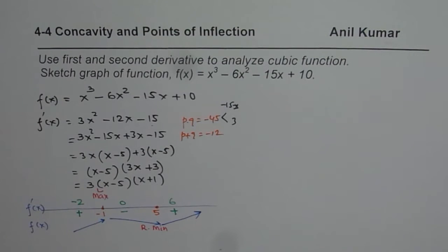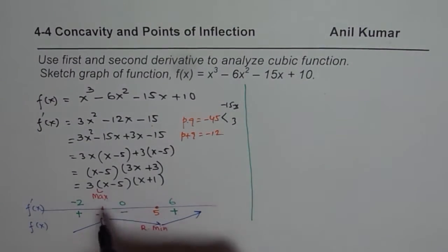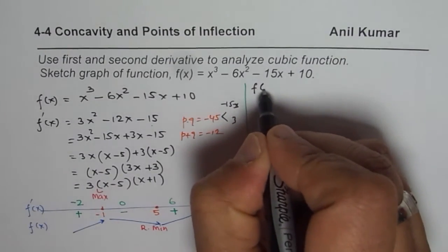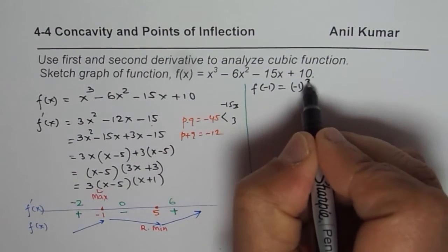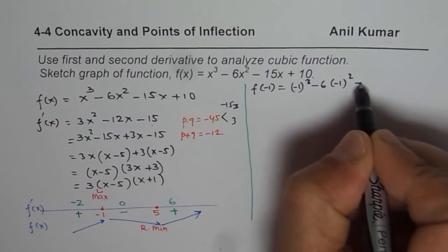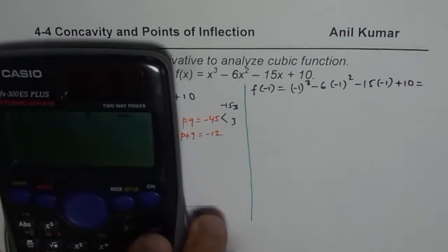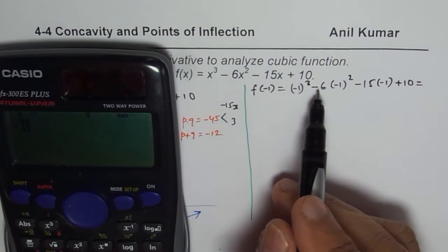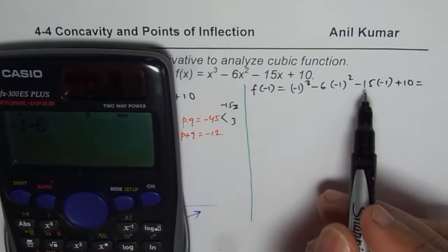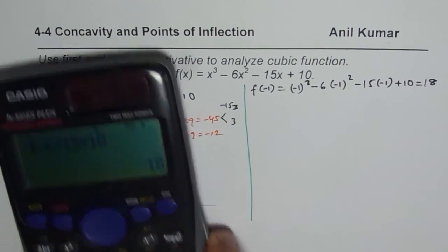Now we can find the actual maximum and minimum values by substituting into the original function. Substituting x = −1: f(−1) = (−1)³ − 6(−1)² − 15(−1) + 10 = −1 − 6 + 15 + 10 = 18. So f(−1) = 18 is the local maximum value.